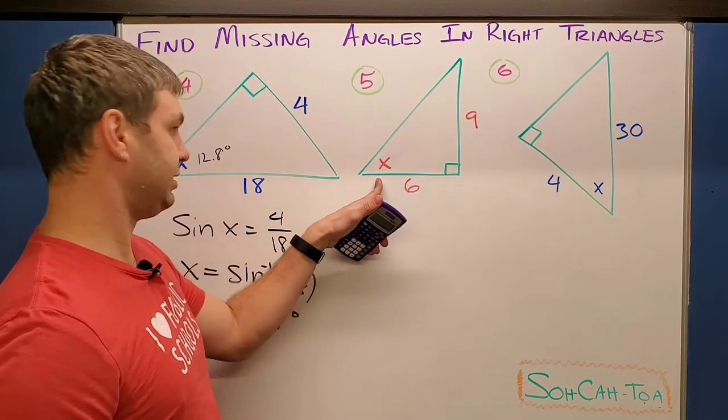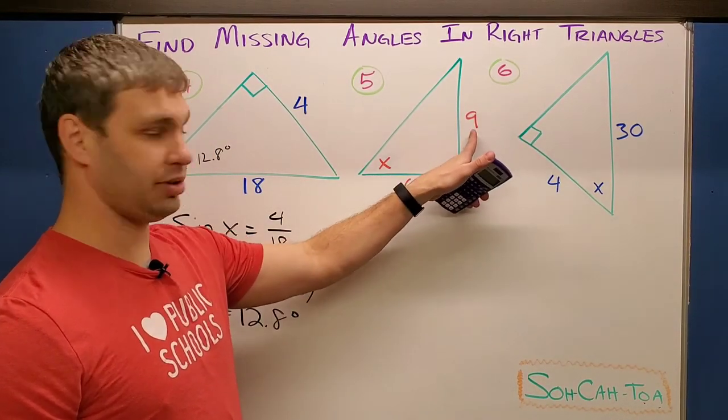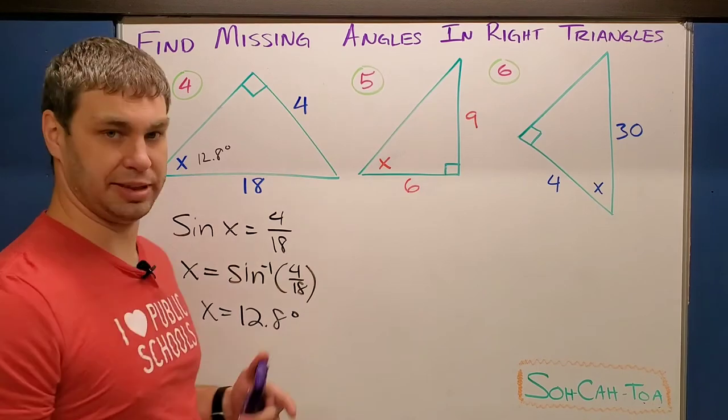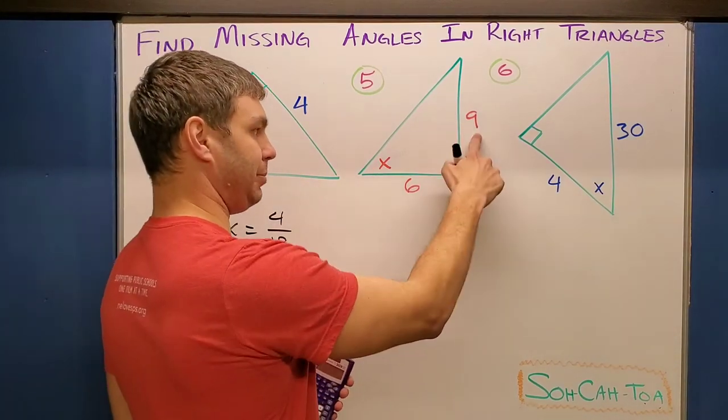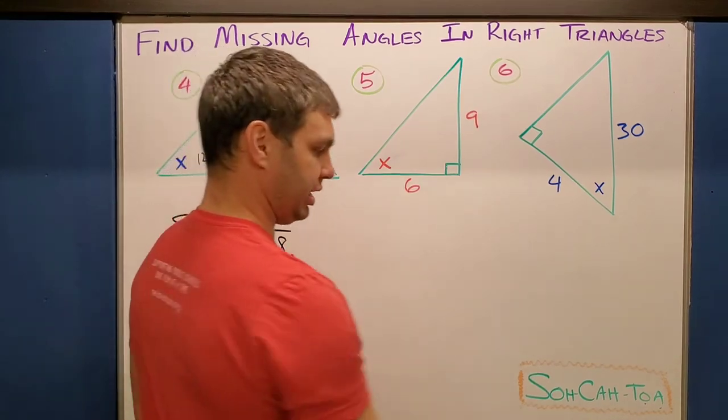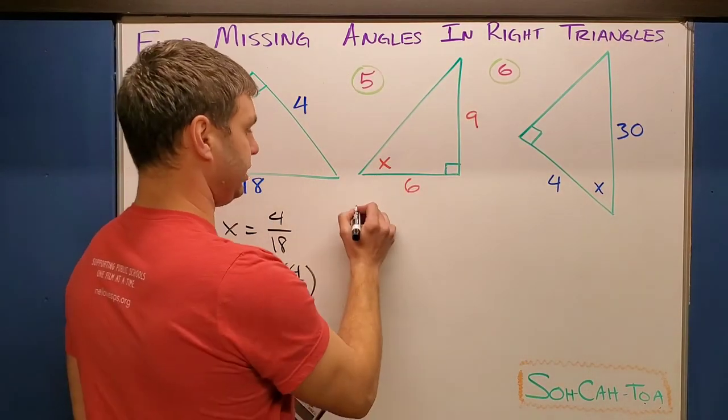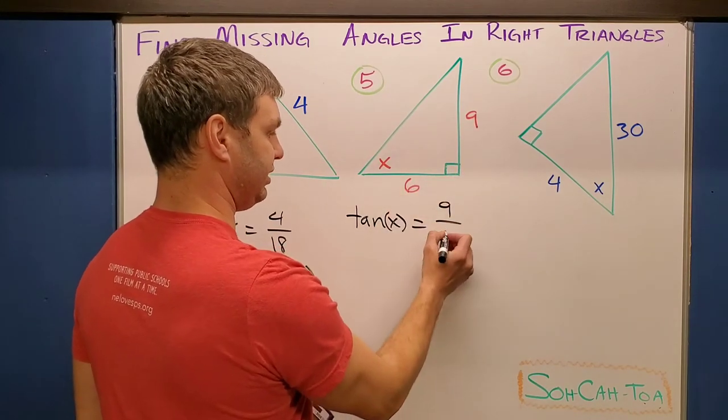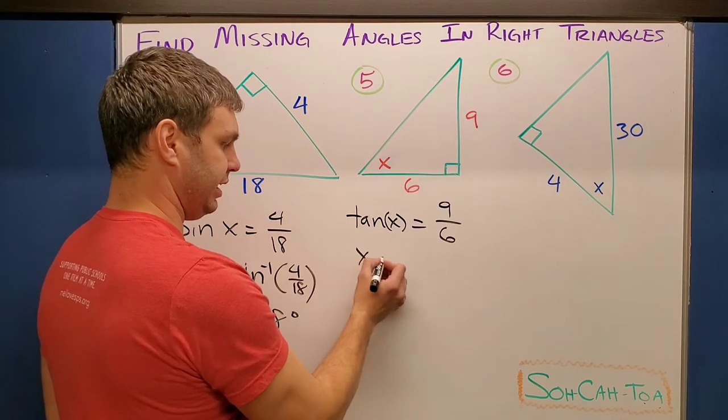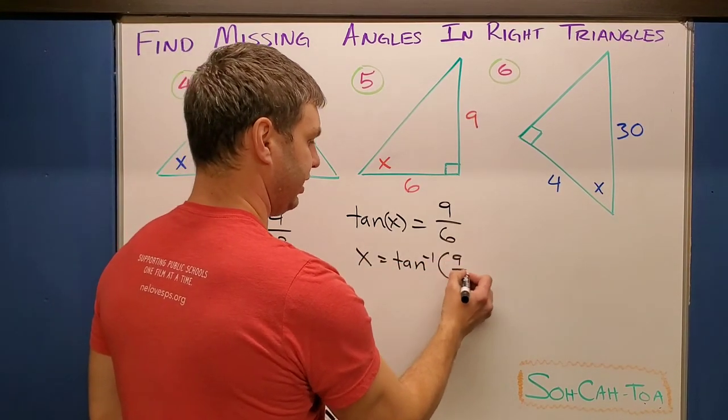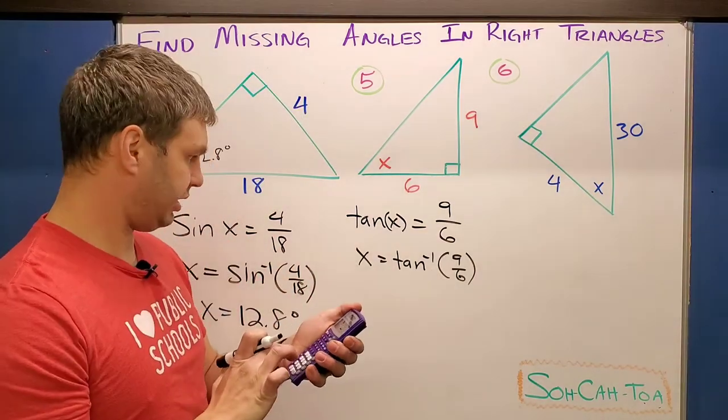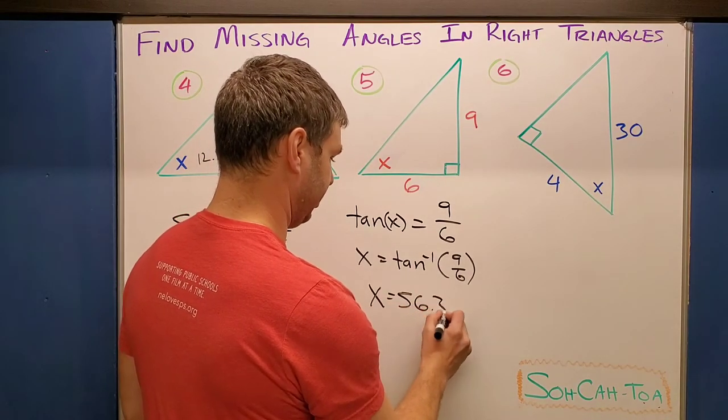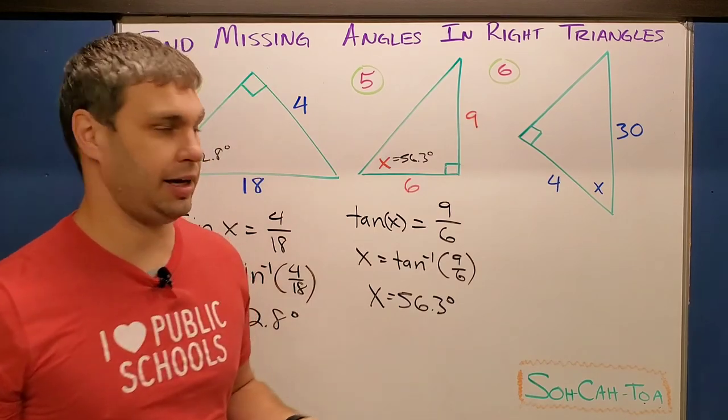What about number five? This time the X is in the left corner and we have the side across from it. These look really similar, but notice the position of our right angle is a little bit different. So this one, I actually have the opposite leg and the adjacent leg, which happens to be my tangent function. We're going to say tangent of X equals the opposite 9 over the adjacent 6. So if I want to find X, I can say X equals the inverse tangent of 9/6 and let the calculator do it. It's 56.30, so we can say X equals 56.3 degrees, just like that.